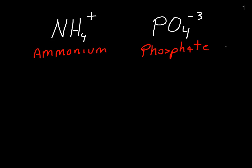Now, how this works is I'm going to cross the charges. So there's the ammonium ion, and here is the phosphate ion, minus 3.